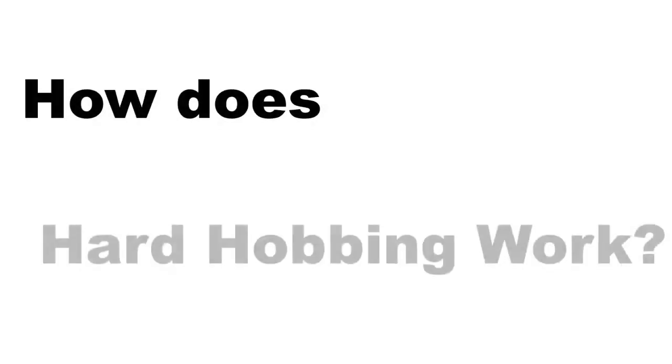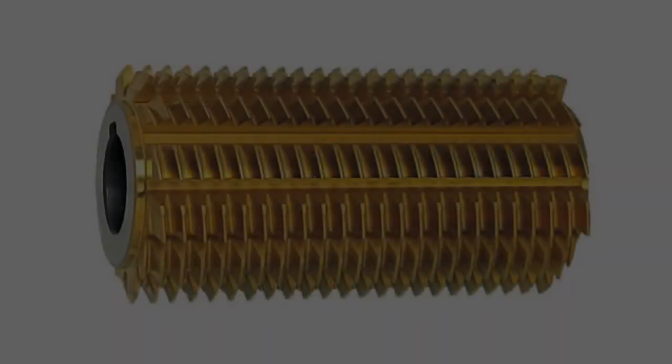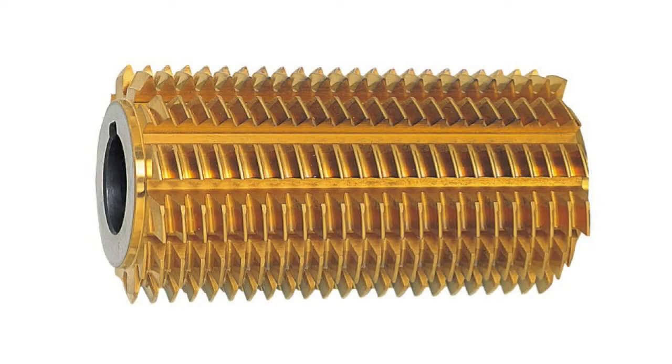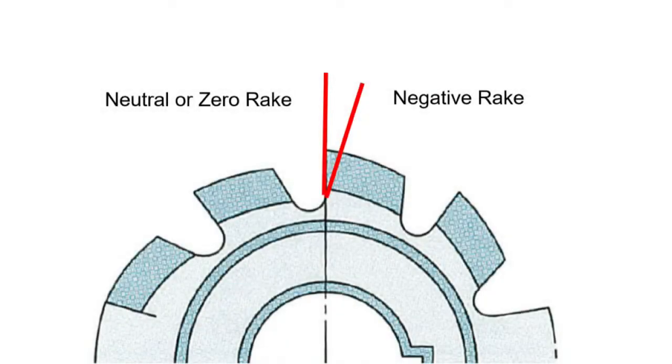How does hard-hobbing work? Since the gear teeth are already on the part that will be hard-hobbed, the cutting tool needs to be specifically designed for hard-hobbing. A negative rake angle is sometimes used on the hob flute to create the proper cutting conditions to remove a controlled amount of material from the flanks of the gear teeth.